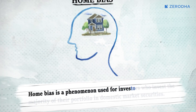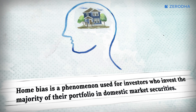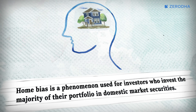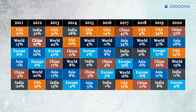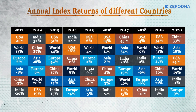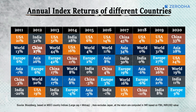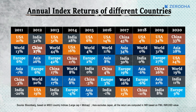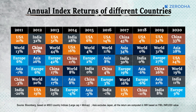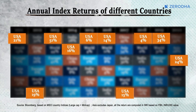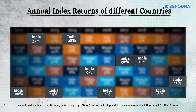Home bias is a phenomenon describing investors who invest the majority of their portfolio in domestic market securities. Have a look at this table — it shows the annual index returns of different countries for different years. Clearly, we can see that India is not the only country that has performed better across the globe. Returns in countries like the USA have also outperformed returns for India.